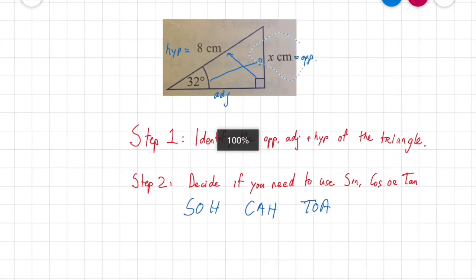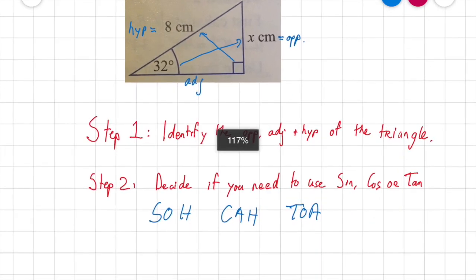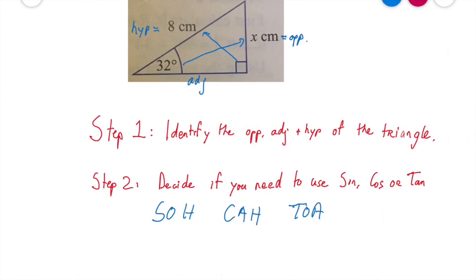We have the opposite side and we have the hypotenuse. So what is it we're going to use? Do we use sine? Do we have the opposite and do we have the hypotenuse? Yes we do. So that can work.